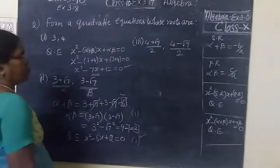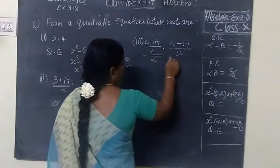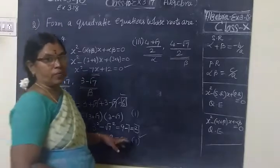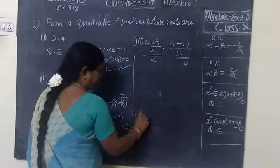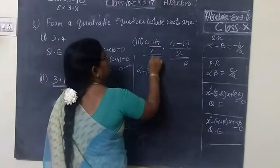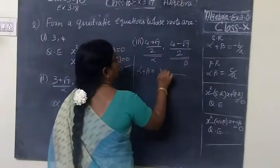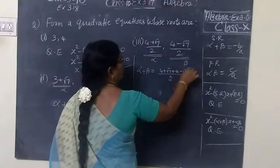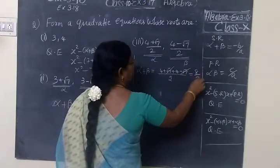This is correct. Then for the third one, this you treat it as alpha, then it is beta. Now you have to find sum of roots, product of roots. So sum of roots means alpha plus beta. Then add the numerators. Denominator is same, so 4 plus root 7, 4 minus root 7, root 7, root 7 cancel. 4 plus 4, 8 by 2, so equal to 4.